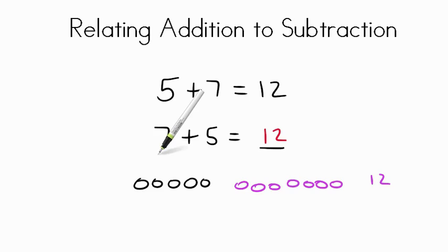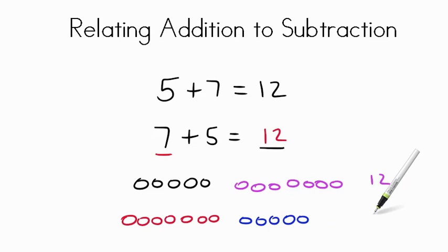If we look at this number here we have seven one, two, three, four, five, six, seven and we add five in one, two, three, four, five it is also going to equal 12.